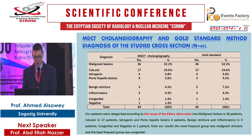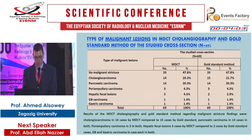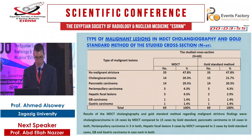Regarding the causes of biliary obstruction, malignant causes were more common than benign causes. Causes included malignant lesions, calcular, iatrogenic, benign hepatic lesions, benign structural, inflammatory, and congenital lesions. Malignant lesions included cholangiocarcinoma, pancreatic carcinoma, periampullary carcinoma, hepatic focal lesions, gallbladder carcinoma, and gastric carcinoma.